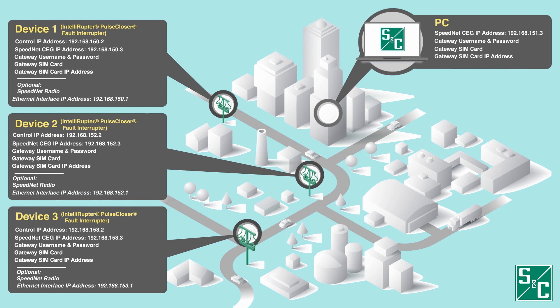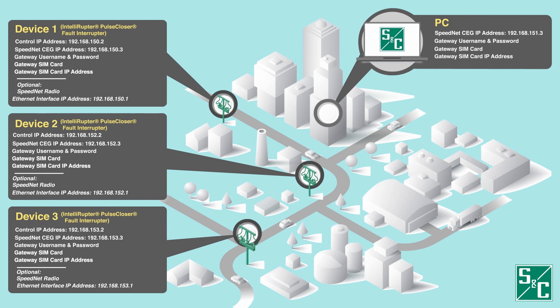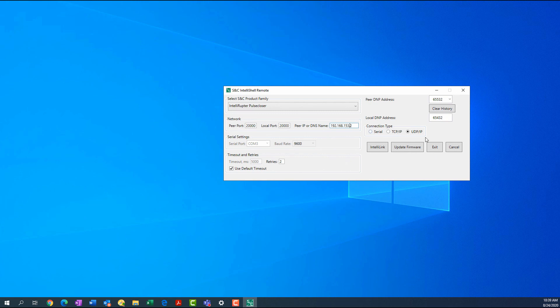To do this, we'll use the PC. Confirmation that each Intelliruptor fault interrupter is capable of communicating over the cellular network is provided by establishing a remote connection to the Intelliruptor fault interrupter through S&C IntelliLink. This will require that the PC has persistent Internet Protocol Version 4 routes capable of directing traffic to the IP addresses of the Intelliruptor fault interrupter controls. These can be added by using the PC's command prompt. To make the remote connection, use the IP address that was assigned to the Intelliruptor fault interrupter control.